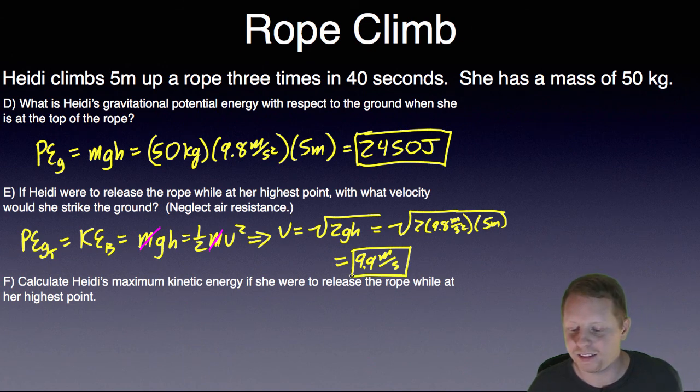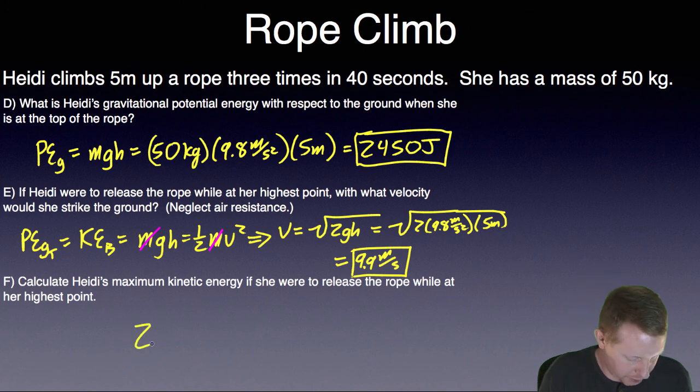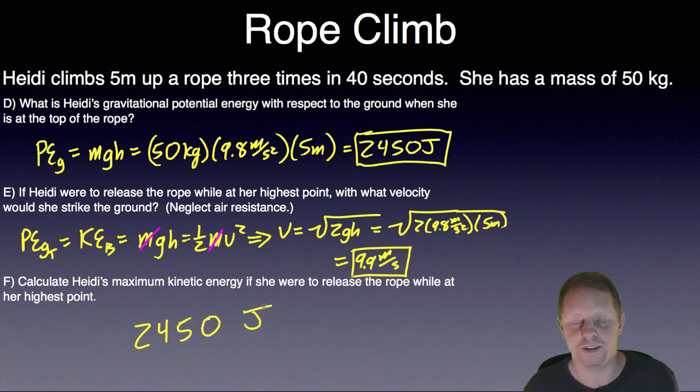And finally, calculate Heidi's minimum maximum kinetic energy if she were to release the rope while at the highest point. Well if she had 2,450 joules of gravitational potential energy at the top, she must have that amount of kinetic energy right before she strikes the ground. So that would be 2,450 joules again.